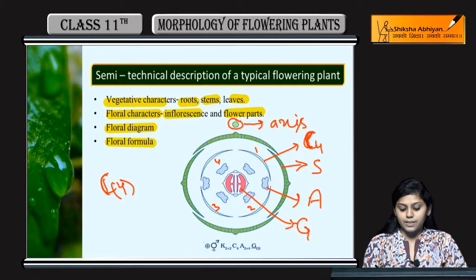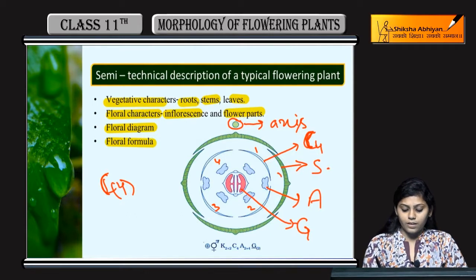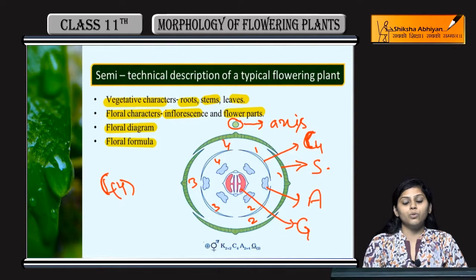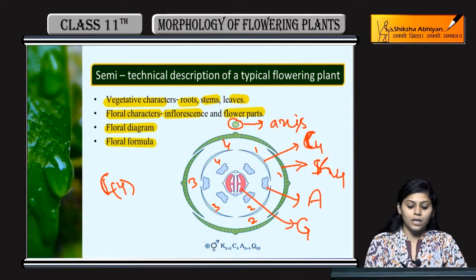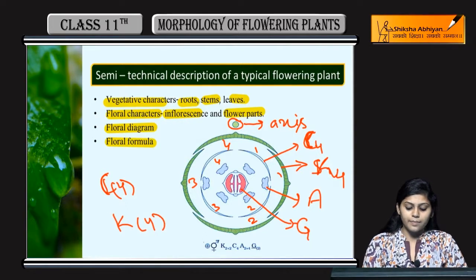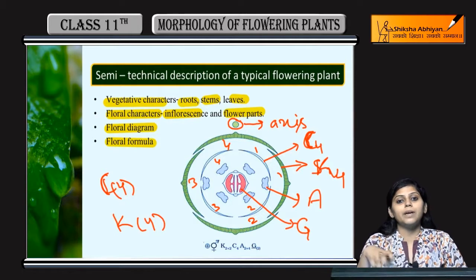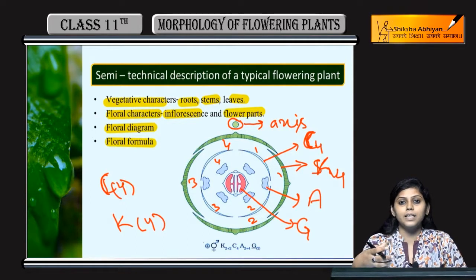Sepals bhi fused nahi hain, toh hum sepals ko K se denote karte hain - K4 likhenge. Agar fused hote toh bracket ke andar likhenge. Androecium bhi agar fused hote toh unhe brackets ke andar likhenge, varna hum aise hi free form mein likhenge. Same is the case with gynoecium.